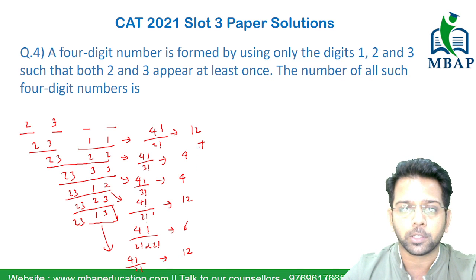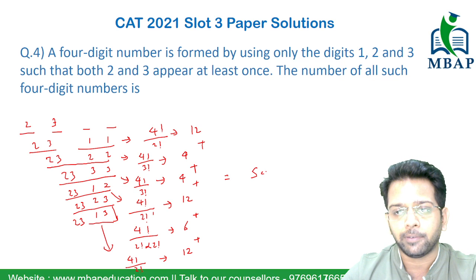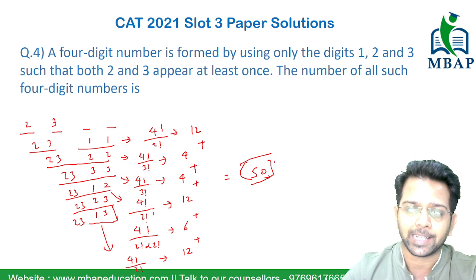So my final sum count is 4 plus 12 plus 4 plus 12 plus 6 plus 12. And if you add them, you will get the final count as simply 50. And that's my answer.